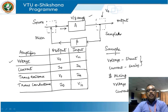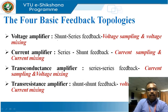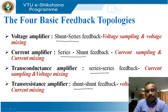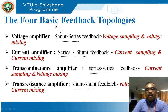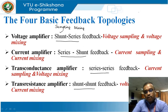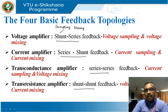The four topologies are: shunt-series, series-shunt, series-series, and shunt-shunt. The first word in the topology name indicates the sampling part and the second word indicates the mixing part. If you want to sample a voltage, you do it in shunt; if you want to mix a voltage, you do it in series. Likewise, if you want to sample a current, you connect in series; if you want to mix a current, you connect in shunt.